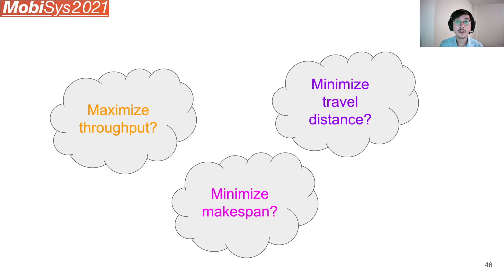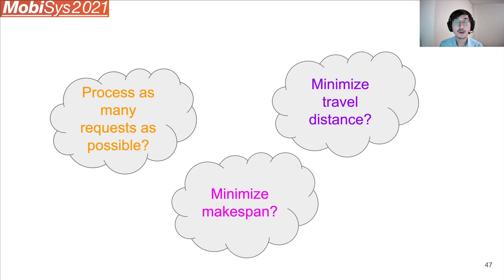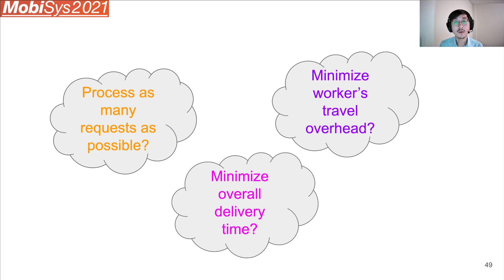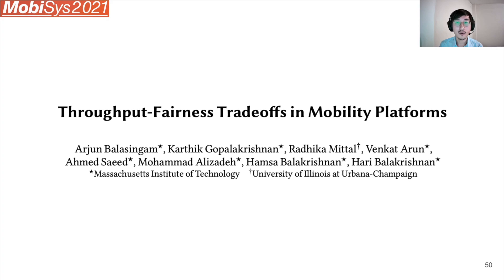To see that, let's consider DoorDash, a food delivery app. Maximizing throughput means processing as many requests as possible, which is certainly a good objective, but it may not result in good customer satisfaction because you might just serve short jobs and not take on jobs that take a long time. Minimizing travel distance means helping workers minimize their travel overhead — again a good objective — but you might end up serving only users who live close to restaurants. Minimizing makespan means minimizing overall delivery time, which is good for customers, but you might only serve fast-food requests for users close to those restaurants. The Throughput Fairness Trade-offs paper identifies fairness as another important objective, and the talk video will tell you what they mean by fairness and how they balance throughput and fairness at the same time.